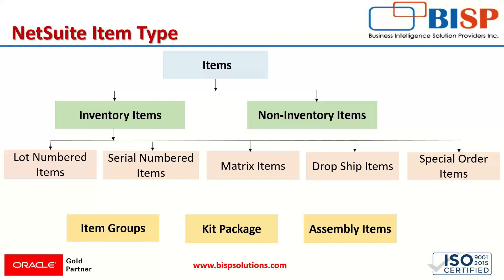If we talk about serial numbered items, serialized inventory is a way to track the purchase and sale of physical inventory items by assigning a serial number to each individual item. Under lot numbered items, we assign a number to a particular group, but with serial numbered items, we assign a serial number to a single item. This lets us choose a specific serial numbered item to fulfill or receive an order.